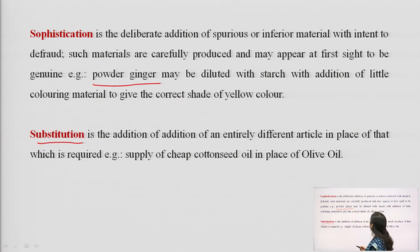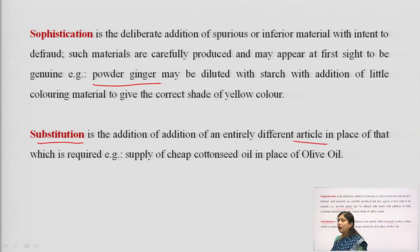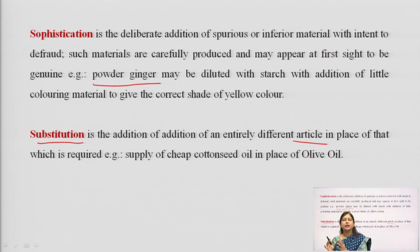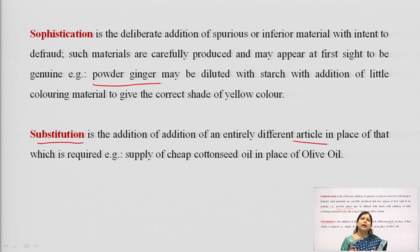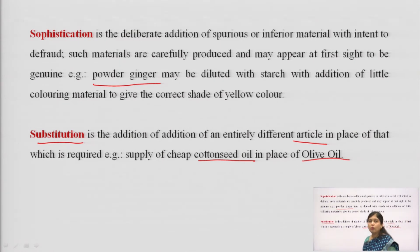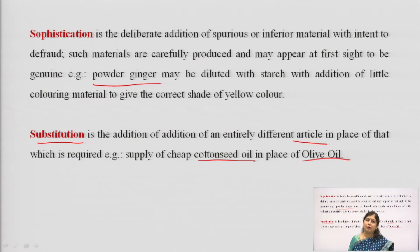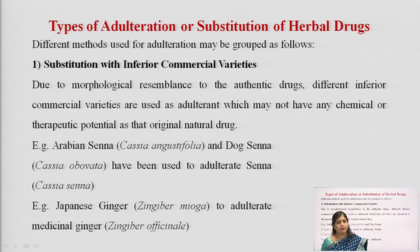Substitution is the addition of an entirely different article in place of what is required. Many people consider substitution is not a type of adulteration because if one drug is not available, why not substitute with another available drug — and it may be acceptable at times. However, if we are substituting with a lower quality substance, then it becomes adulteration. For example, if we supply cotton seed oil in place of olive oil — olive oil is expensive with different medicinal properties, while cotton seed oil is cheap with totally different properties.